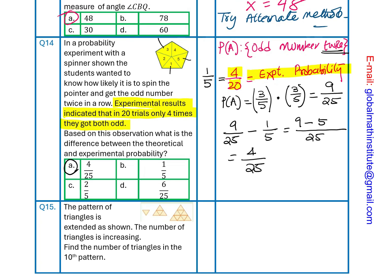The last question here, question number 15. The pattern of the triangle is extended as shown. The number of triangle is increasing. Find the number of triangle in the 10th pattern. So, that's the question for you. You can always pause the video, answer the question and then look into my suggestions. So, let's make a table and see how do this pattern grow. We know the triangle's number is increasing.